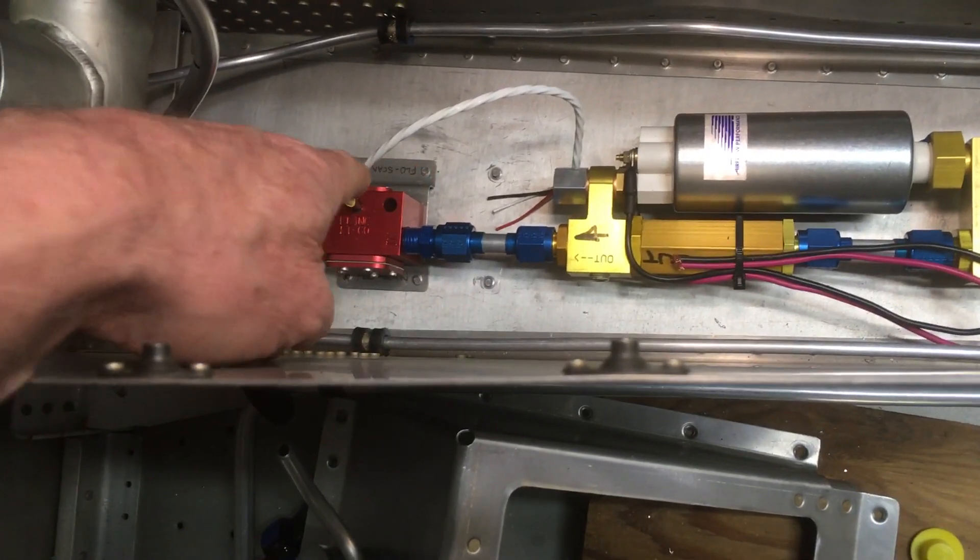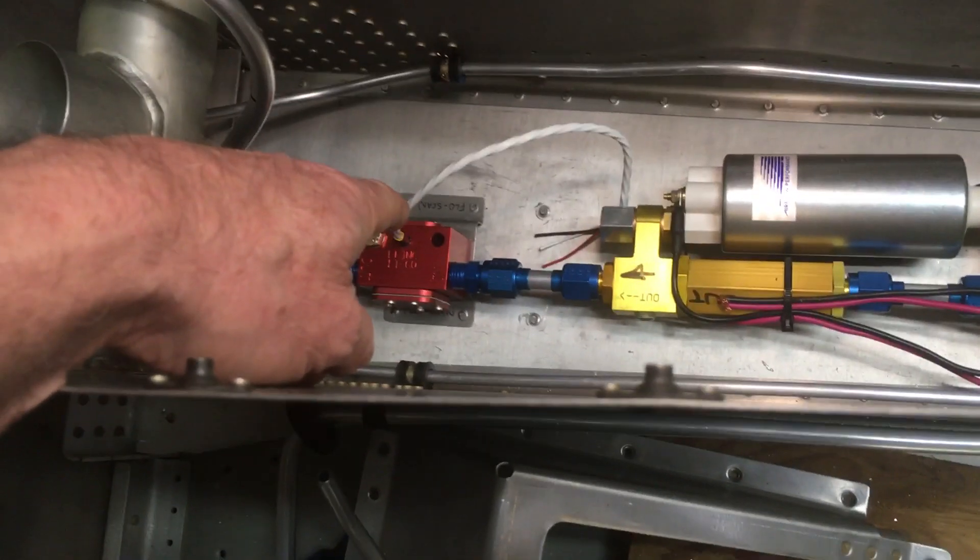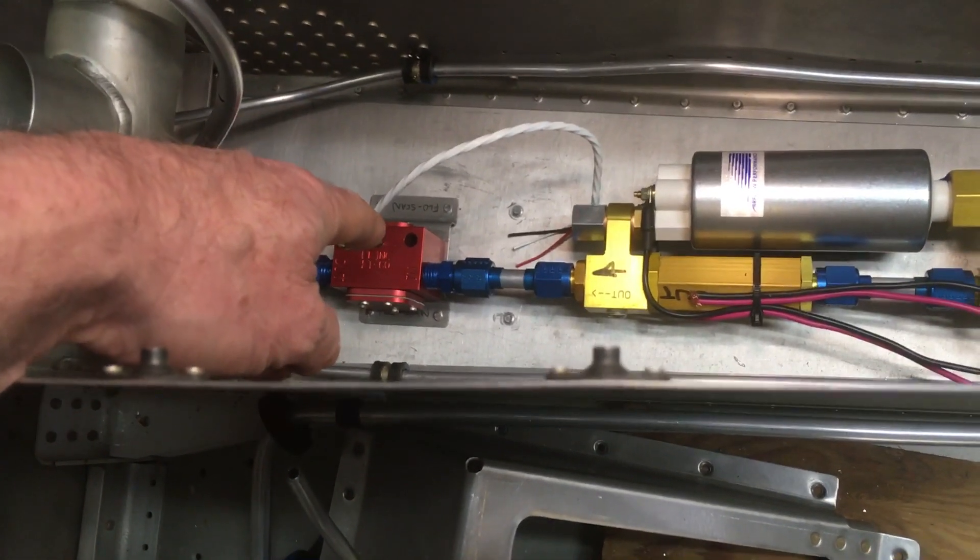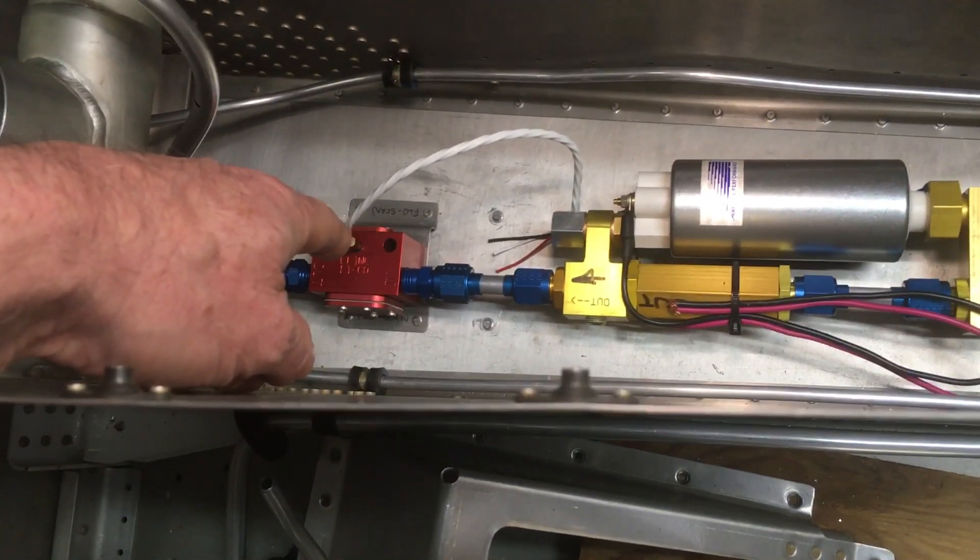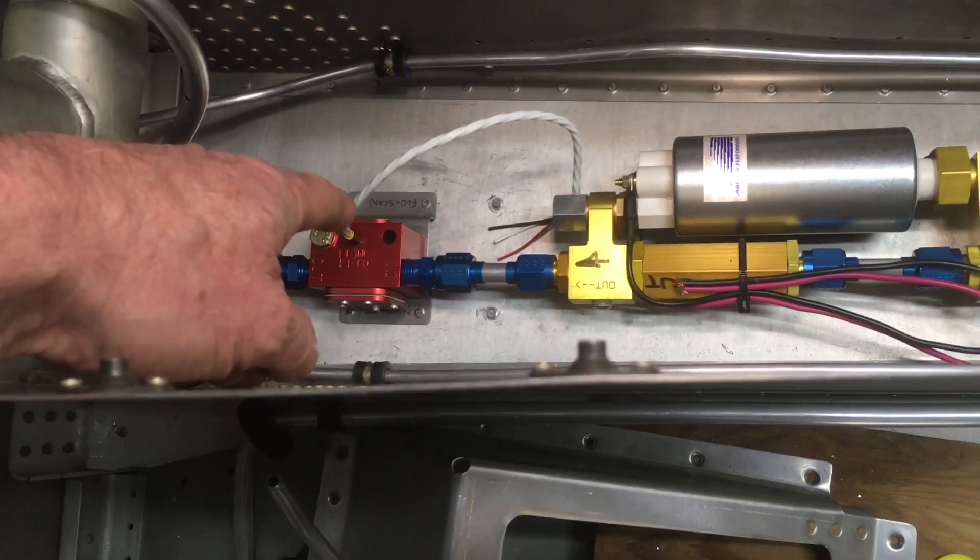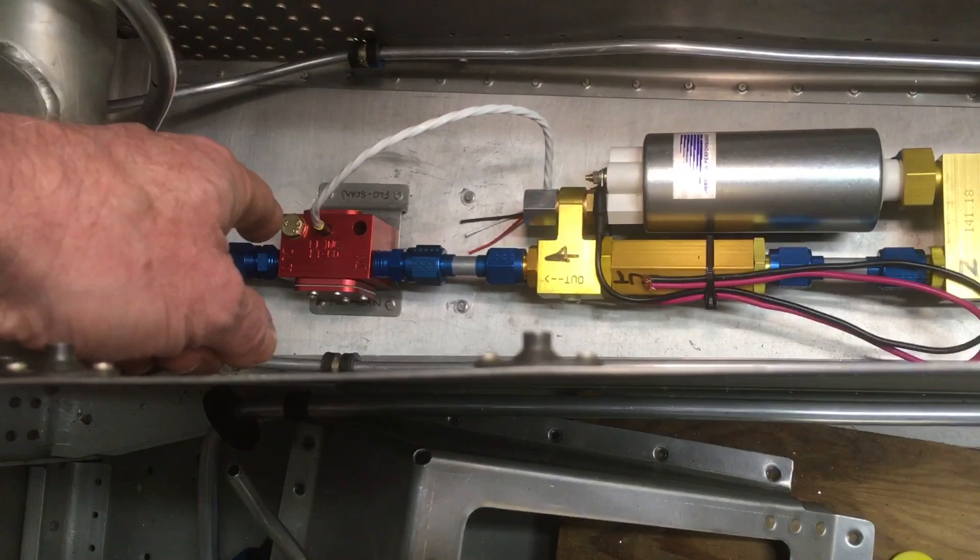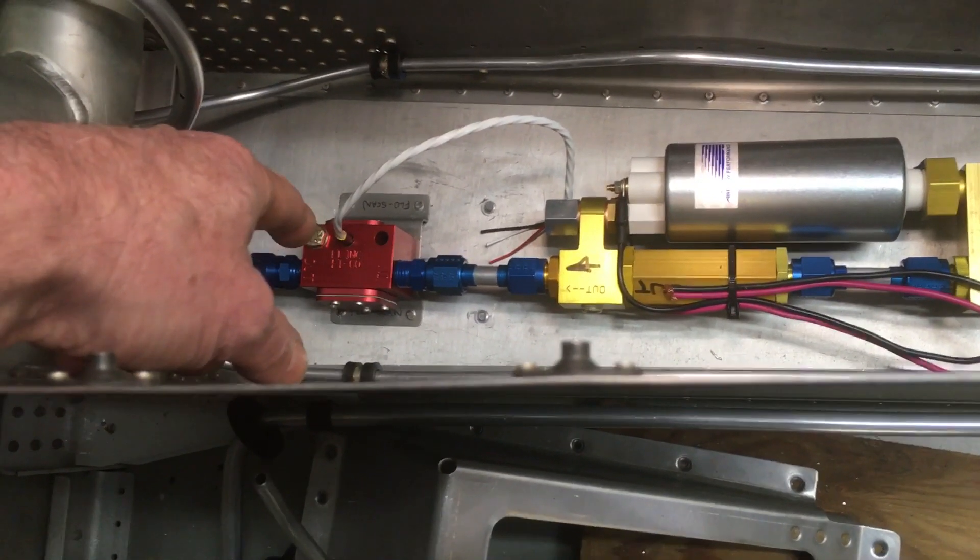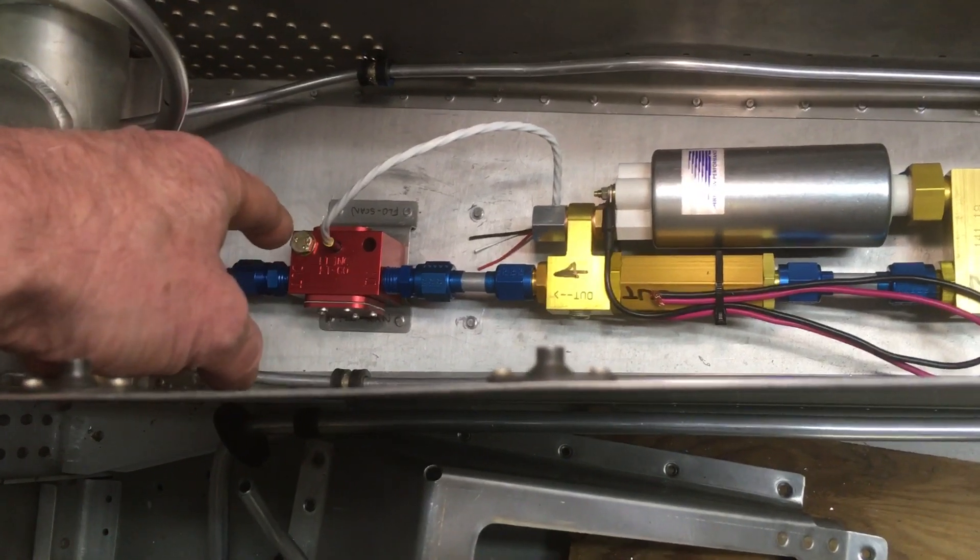That bracket was not installed yet because you had to put nut plates on it depending on which fuel flow sender you used. So they had allowance for Flow Scan, which I don't think you can get anymore, or the Red Cube. That's not riveted down when you get it as a quick build and definitely not as a standard build.